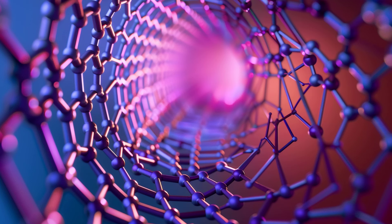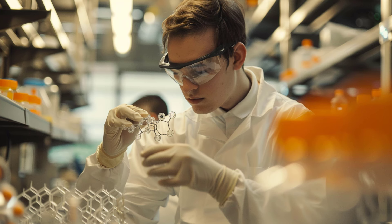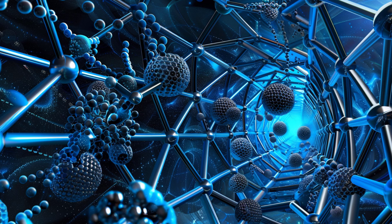Then we have fullerenes. These soccer ball-like structures composed of 60 carbon atoms. Fullerenes possess unique electronic properties and are highly stable, making them useful in photovoltaics, pharmaceuticals, and cosmetics.